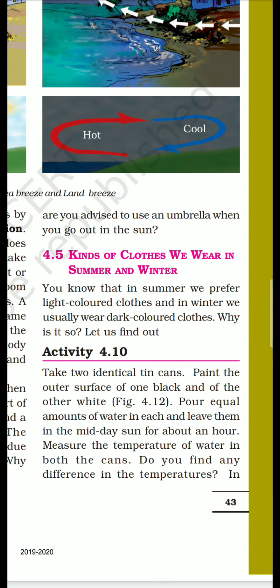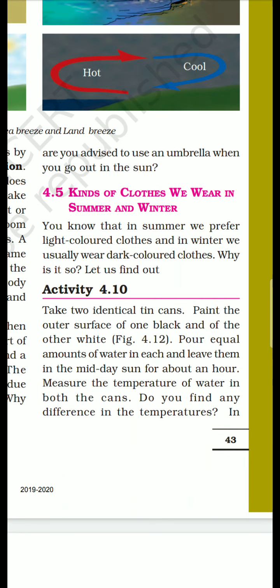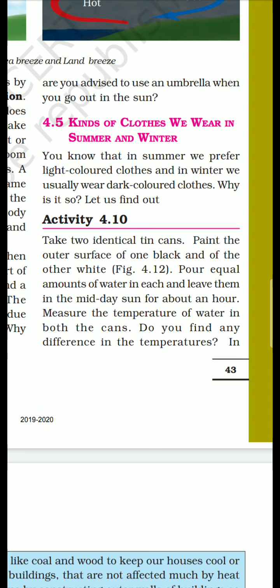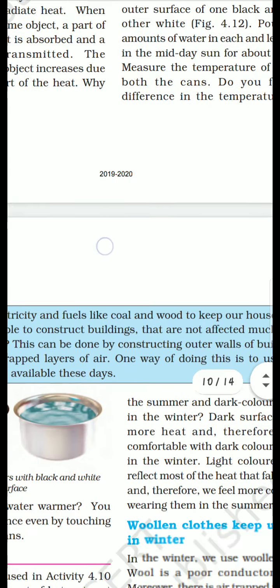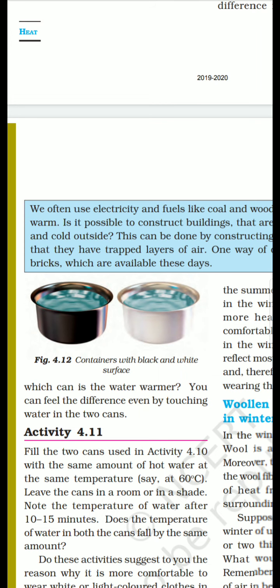Kyun aisa hota hai? Iske baare mein aapko activity 4.10 se samjhane ki koshish ki hai — aapko do cans lene hain, ek ki outer surface ko black color se paint karo, doosre ko white ya simple hi rehne do. Pour equal amounts of water in each and leave them in the midday sun for about an hour. Aapko temperature mein kya differentiation pata chalega — jo black color paint kiya tha uska paani zyada heat hua, yaani usne zyada garmahat soochi. But white color ke can mein nahin hui. Isliye hum thandi mein dark color ke kapde aur garmi mein light color ke kapde pahnte hain.